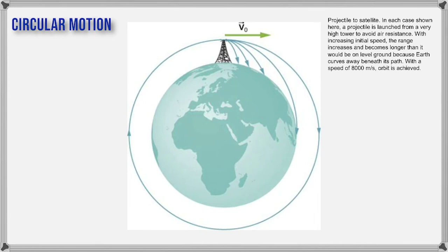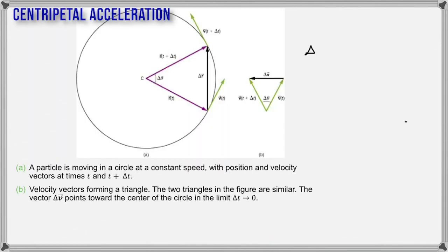In circular motion, an object moves in a circular path with a constant speed — not constant velocity. The number is the same everywhere, like 20 meters per second, but the direction is changing. Since velocity is a vector, if direction changes, velocity is actually changing. We're going to take two points and find the change in velocity using vectors.